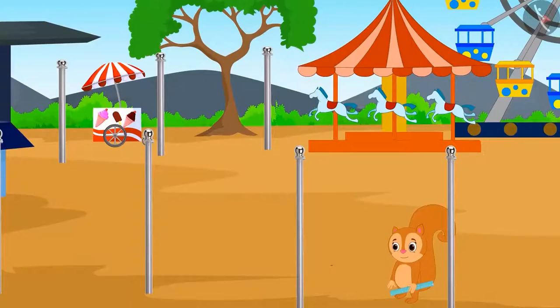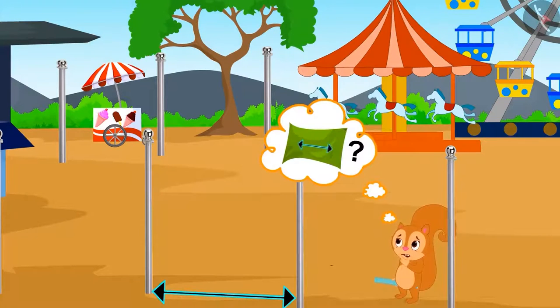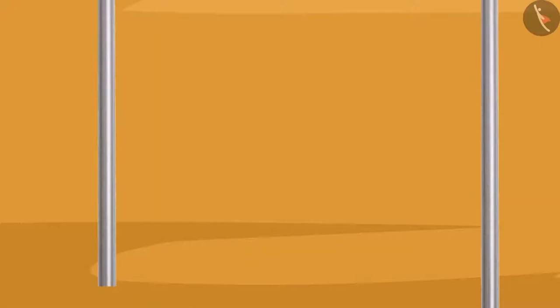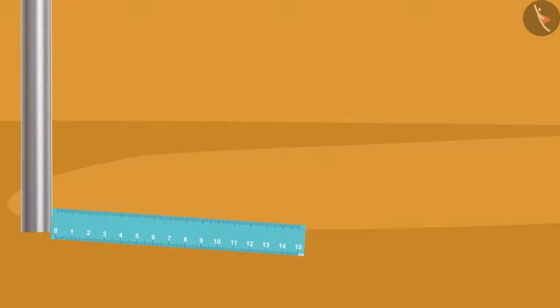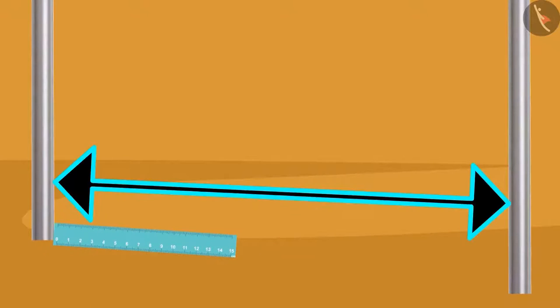Poles were erected at the places where curtains were to be hung. Chanda thought that if she measures the distance between the poles, then she will get the size of the curtain. Chanda began to measure the distance between the poles with her ruler. But Chanda's ruler is very small, and she is unable to measure the distance between the poles with it.